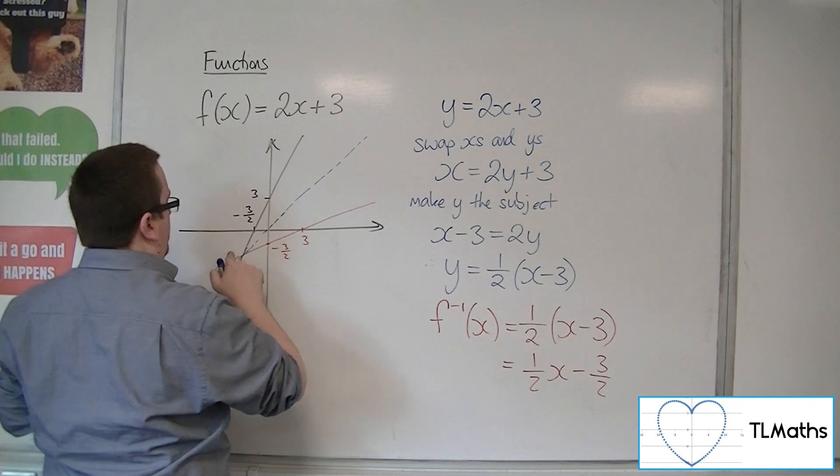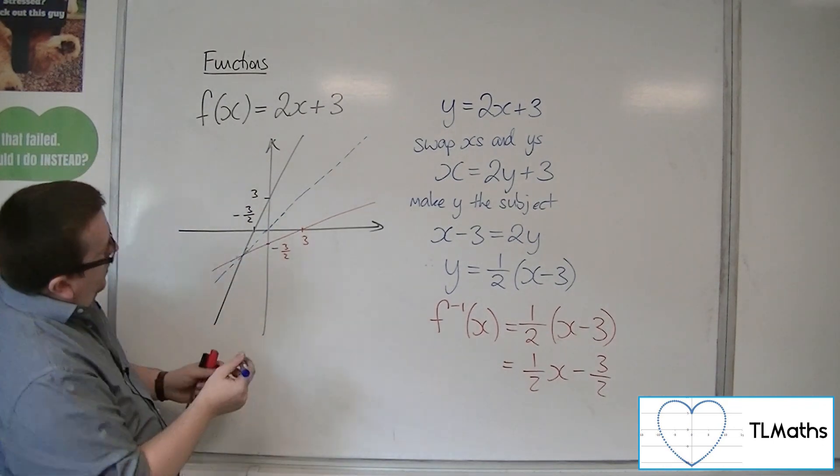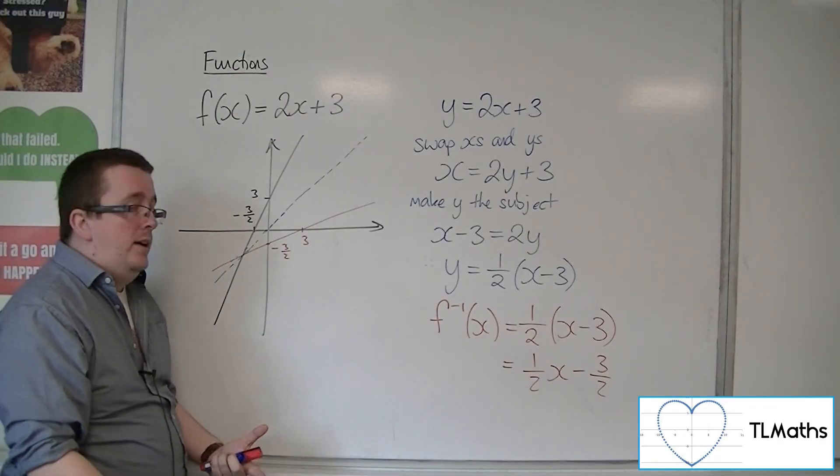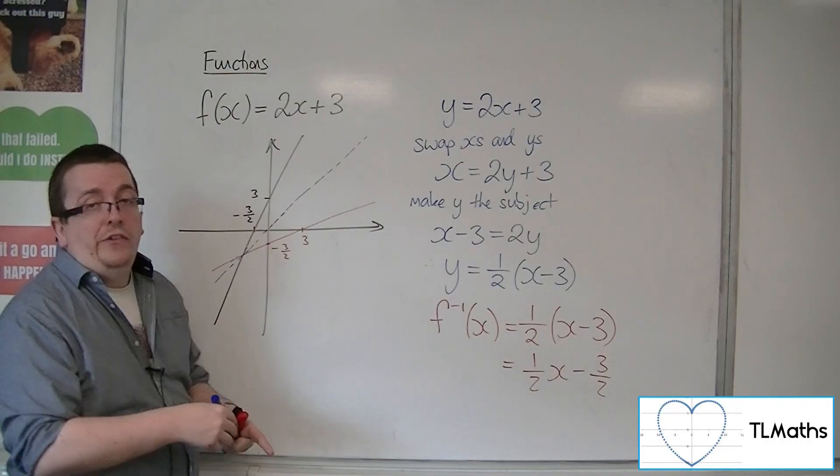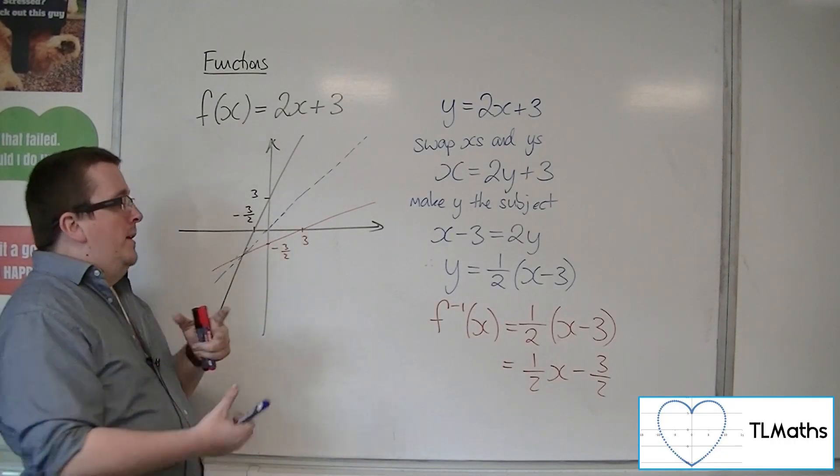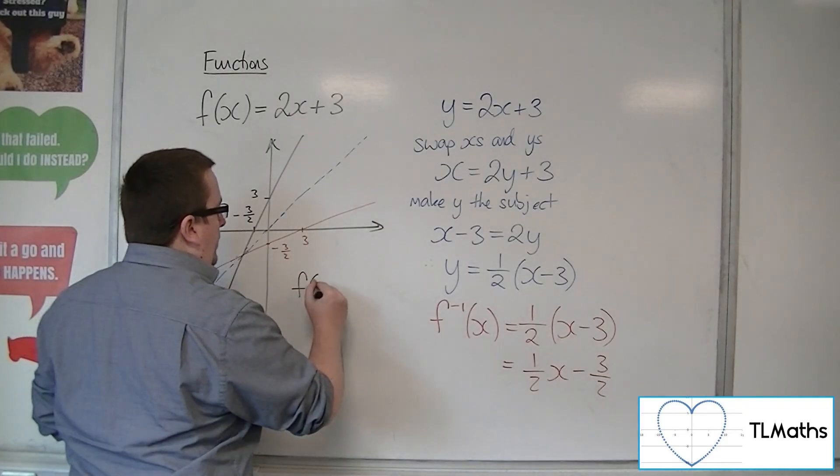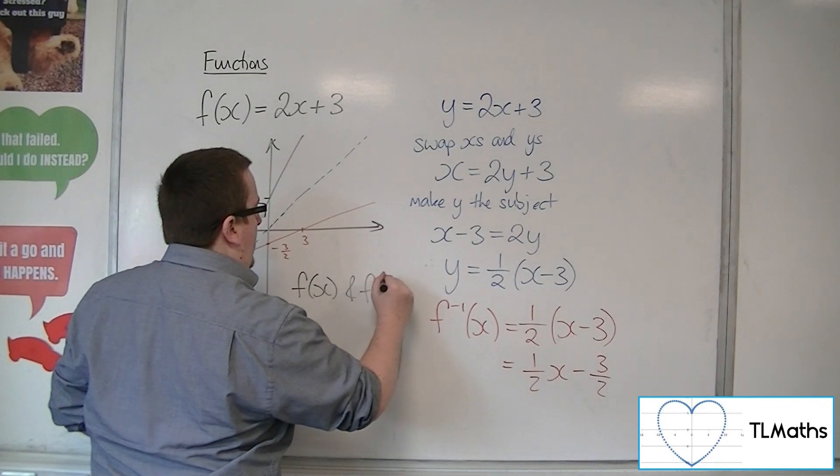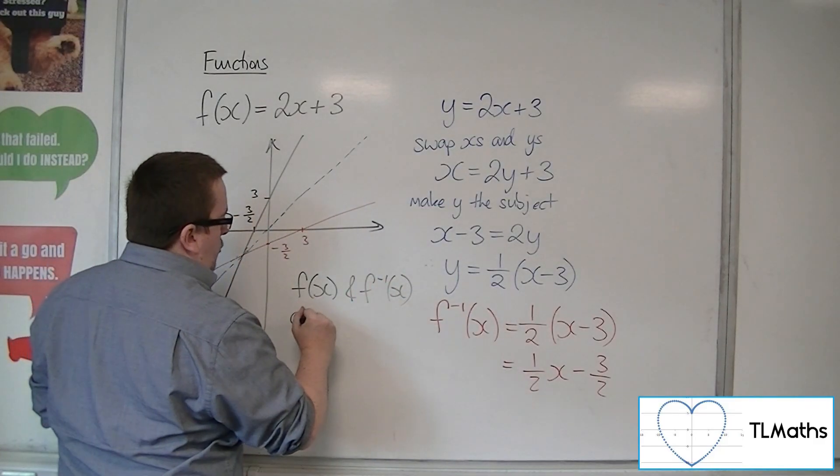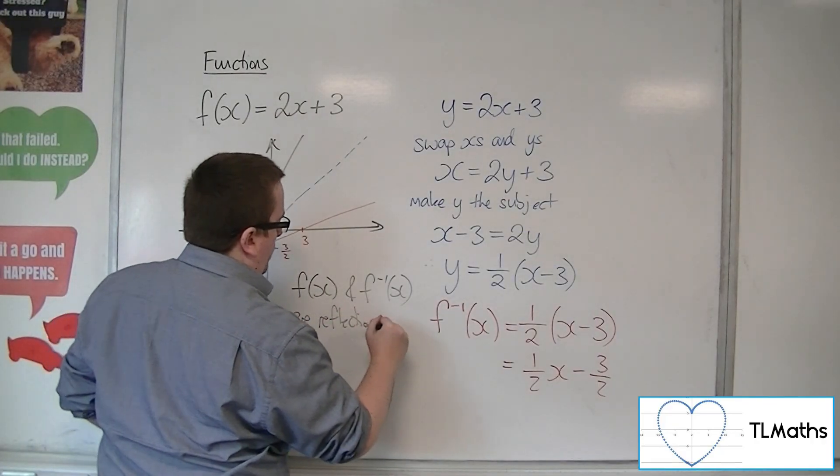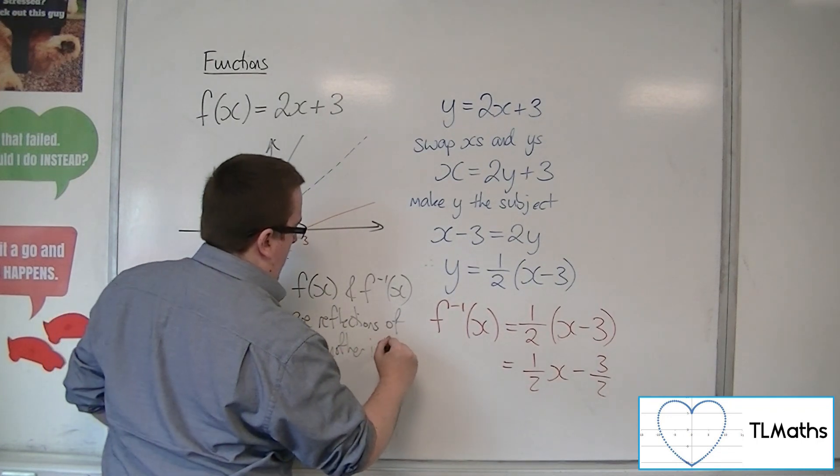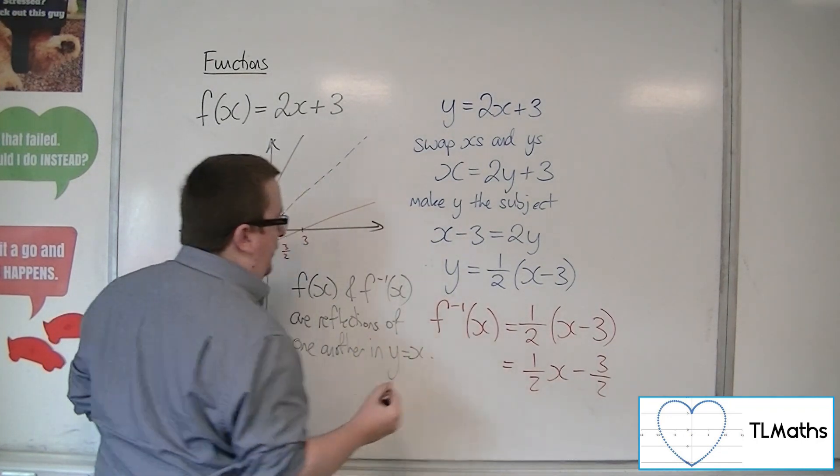Actually, what you have is a black line and a red line that are reflections of one another in the line y equals x. This is a consequence of finding an inverse function. So f of x and the inverse function of f are reflections of one another in the line y equals x.